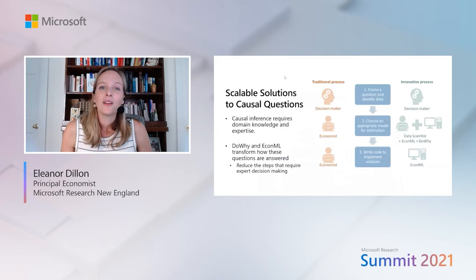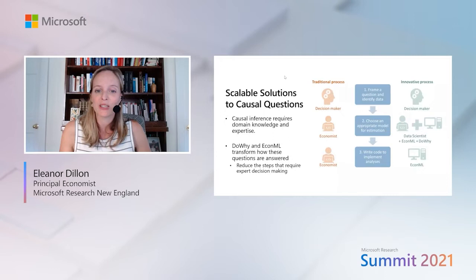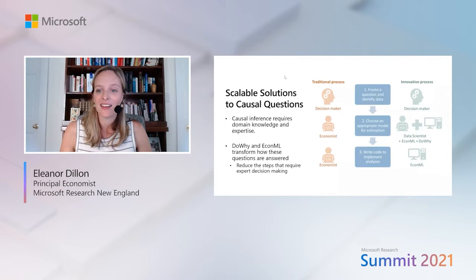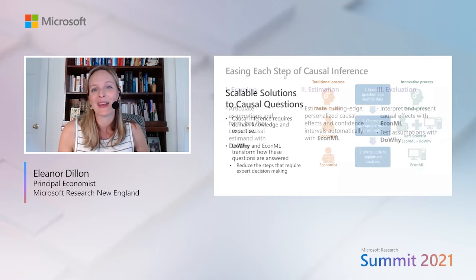No toolkit can remove the domain expertise and human input required in causal reasoning. The traditional process required a decision maker with domain knowledge to frame the question, and then specialists like economists to choose an appropriate model, fit the assumptions, implement the model, and interpret the results. DoWhy and EconML can't remove that first step where you need a decision maker with domain expertise to frame the question, but they can make those second and third steps simpler. I'll now turn this over to Amit to talk about how these toolkits work in practice.